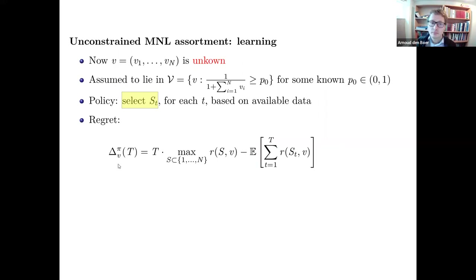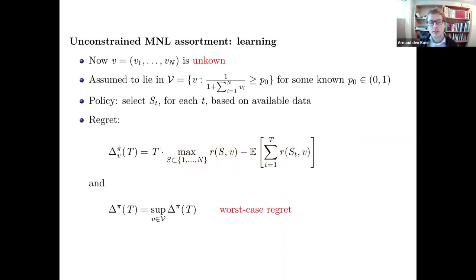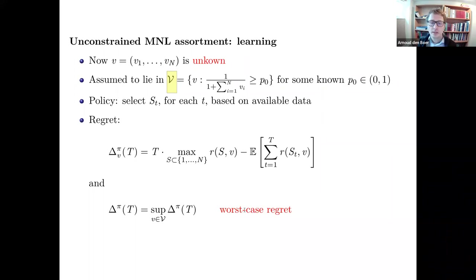The quality of a policy is measured by regret. If I knew v, I'd solve the maximization problem and earn the optimum. Since I don't know v, I offer assortments S_t and earn less. The difference over T time periods in expectation is my loss, which depends on the policy π and the unknown v. We look at the worst-case regret — the supremum over all feasible v vectors.